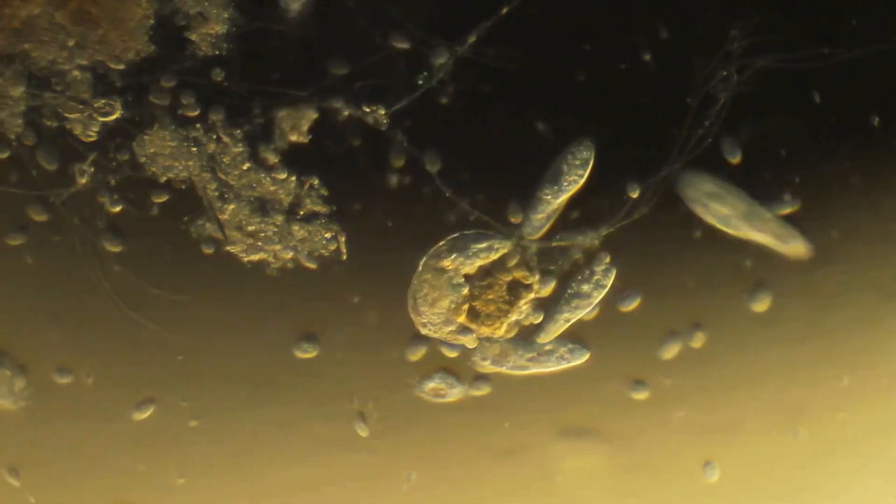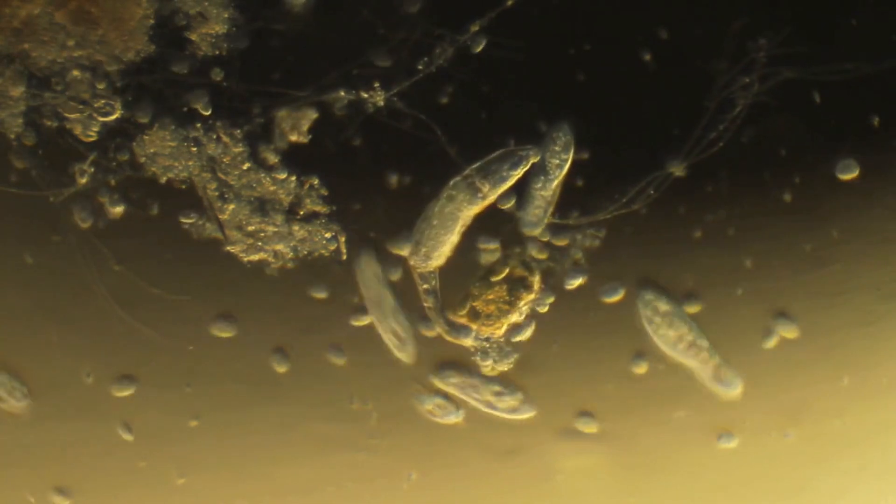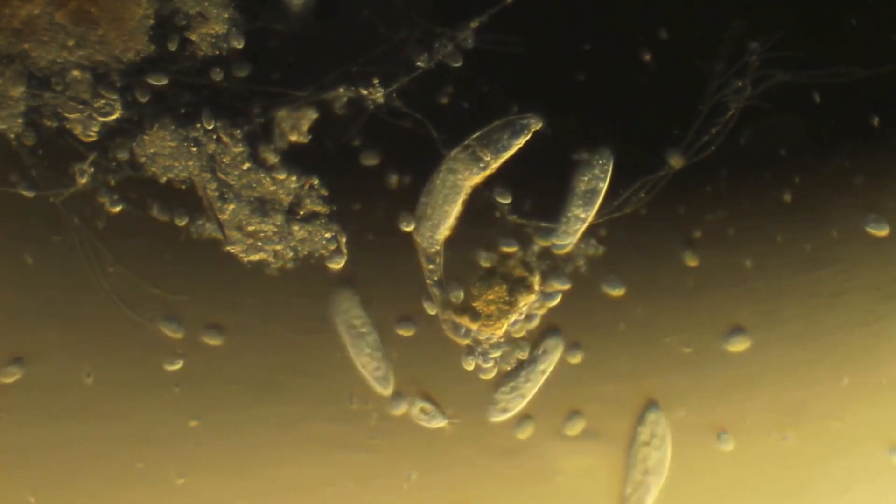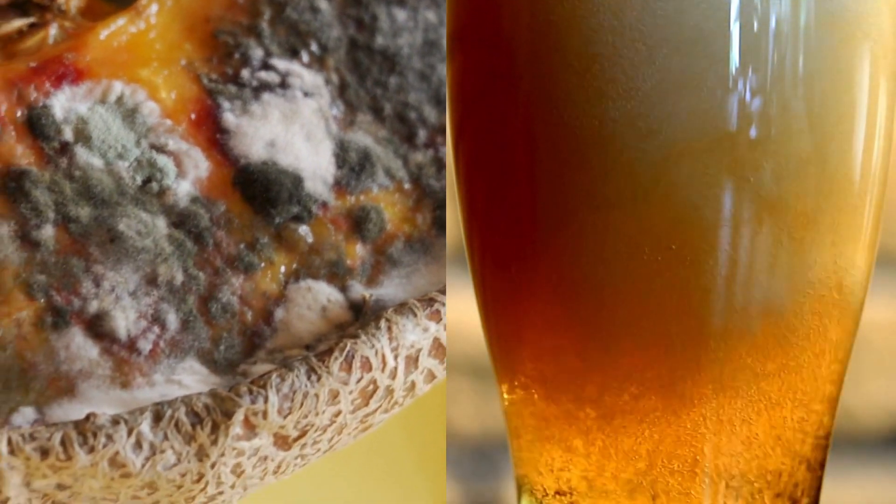You know this is rotten. You know this is fermented. Both processes involve the growth of some tiny living things in food. So what is the difference between fermenting and rotting?